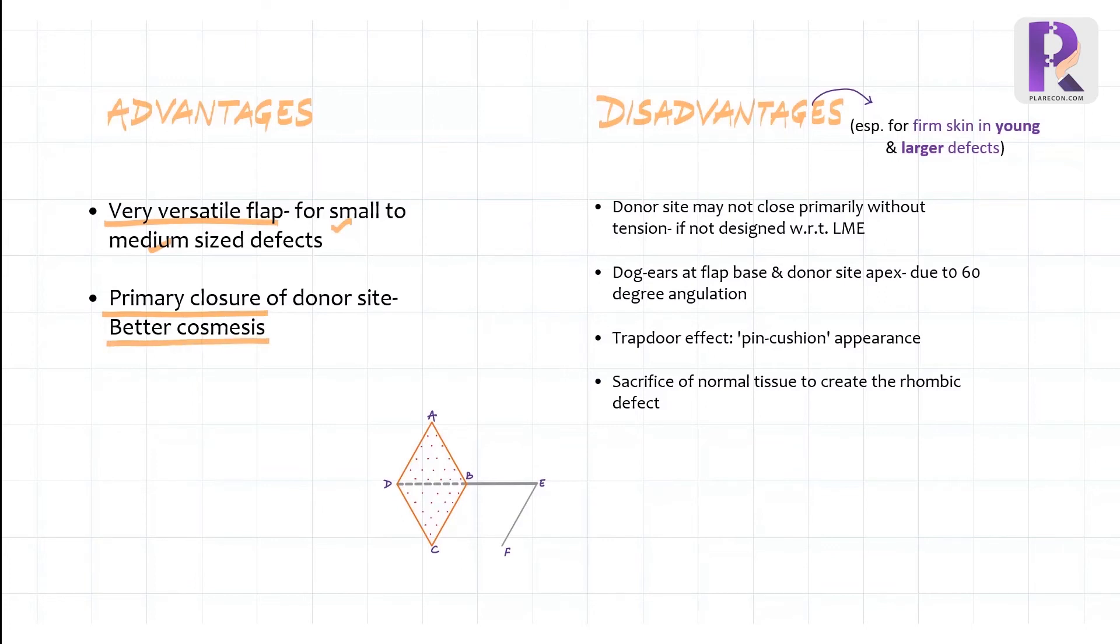However, it does have some disadvantages. In younger patients with tight, firm skin or larger defects requiring a large flap, if the flap is not planned properly and the line of donor site closure is not parallel to the LME, the donor site may not close primarily or it may close under great tension, leading to problems like widened scar.